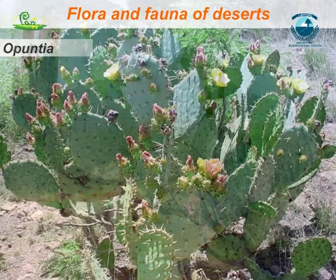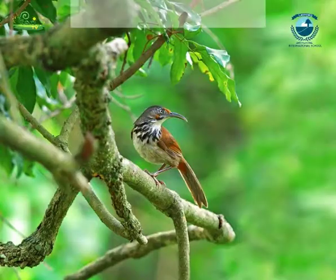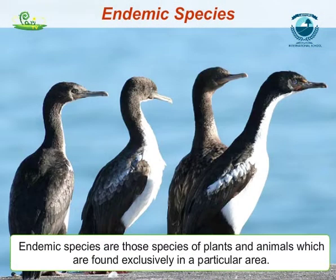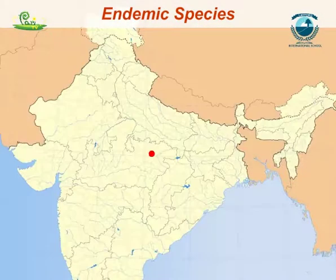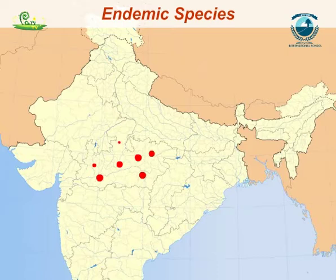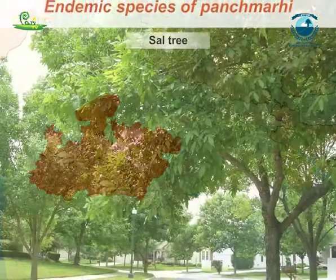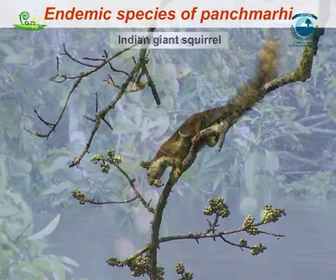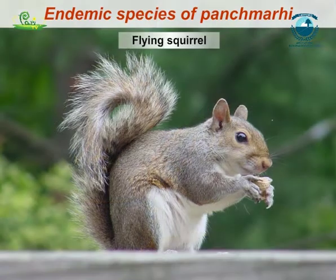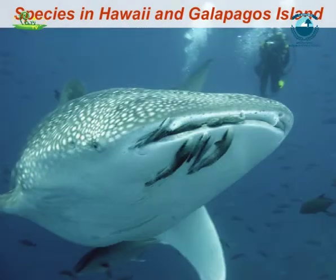Cactus, opuntia, camel and snakes form the flora and fauna of the deserts. Endemic species are those species of plants and animals which are found exclusively in a particular area and are not naturally found anywhere else. A particular type of animal or plant may be endemic to a zone, a state or a country. Sal and wild mango are two examples of the endemic flora of Panchamari. Bison, Indian giant squirrel and flying squirrel are endemic fauna of this area. Various island groups such as Hawaii and Galapagos Islands have large numbers of endemic species.